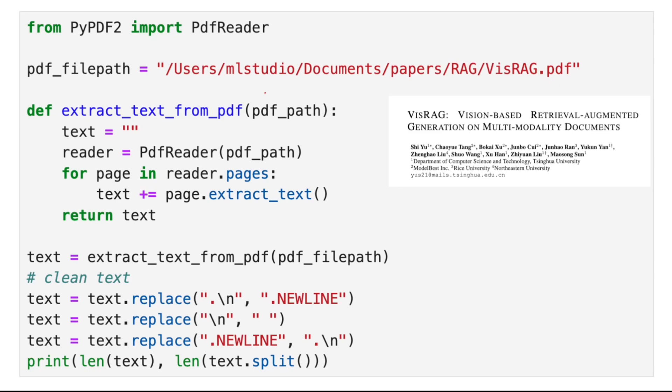We use PyPDF2 to read the PDF file in Python page by page using this PDF reader, and then we concatenate the text together to make a long string. After that, we do some cleaning because the lines in the PDF are ended with slash n, so we remove the unnecessary new lines.